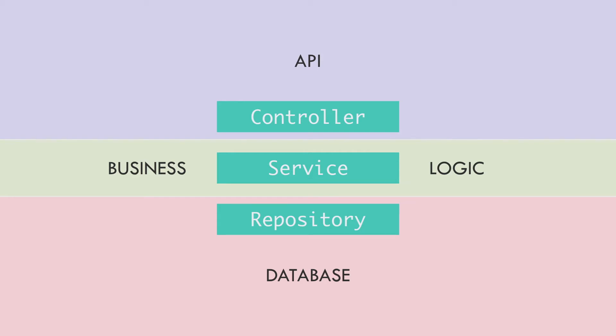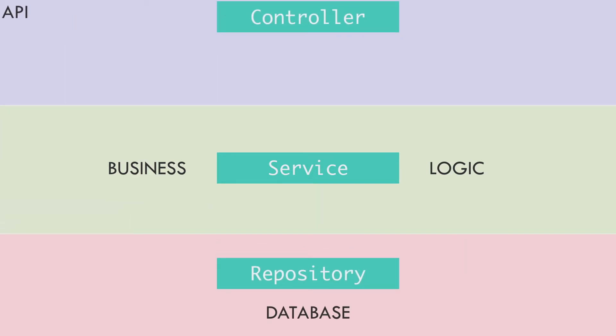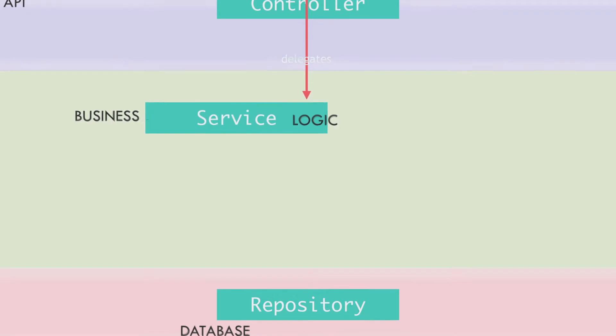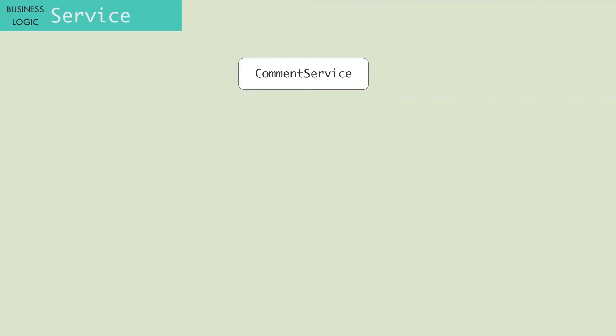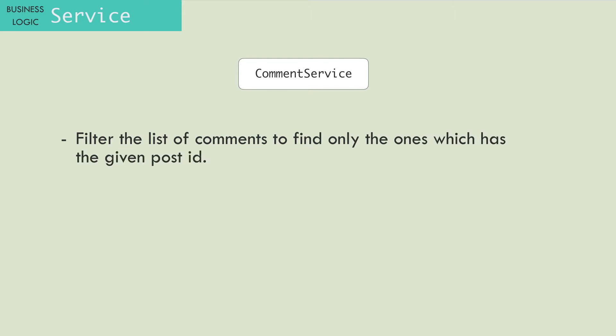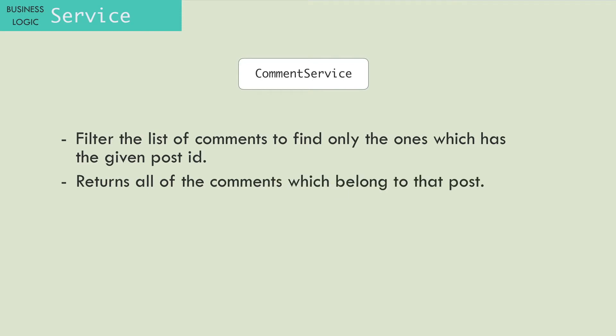Looking back at the high level design, we can see that the service layer is where the business logic should be. So I'm going to delegate the filtering logic to the service layer. For that I'm going to create a CommentService class, and this should have the functionality to filter the list of comments to find only the ones which have the given post ID, and then return all of the comments which belong to that particular post.